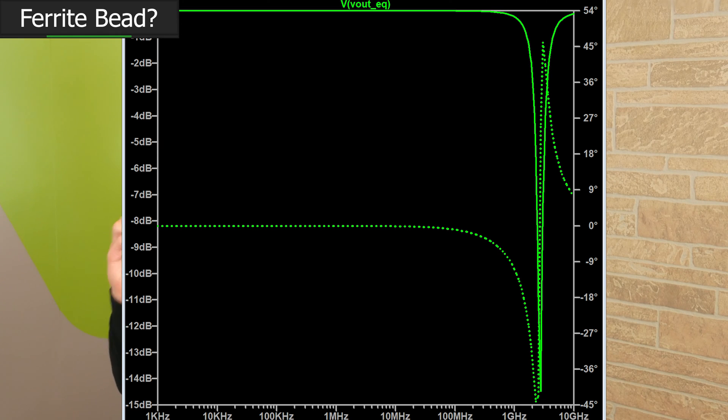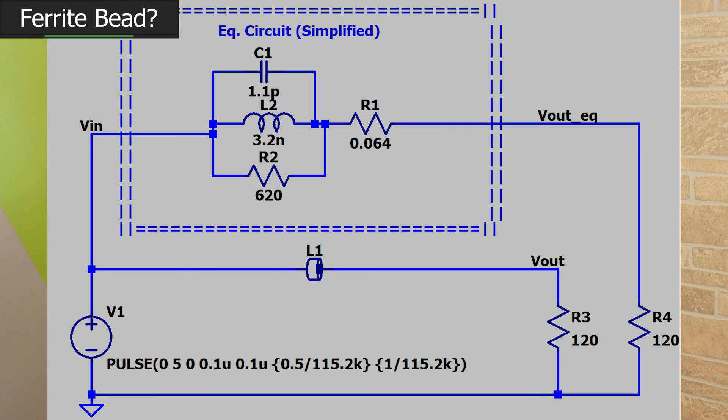Now that's because the inductor's dominating. But as the frequency continues to increase, the capacitor eventually becomes the dominating element, and the equivalent resistance drops again. That's pretty neat, right? So really high frequencies can pass, really low frequencies can pass, and there's that bend in the middle where attenuation happens. Neat, I guess. But what's the point?